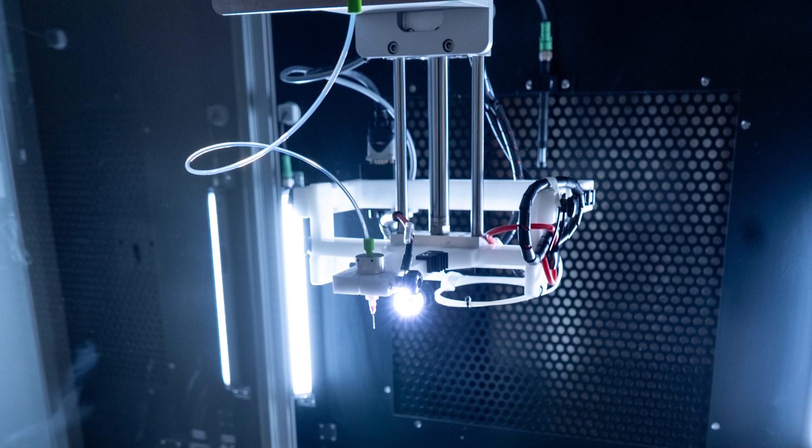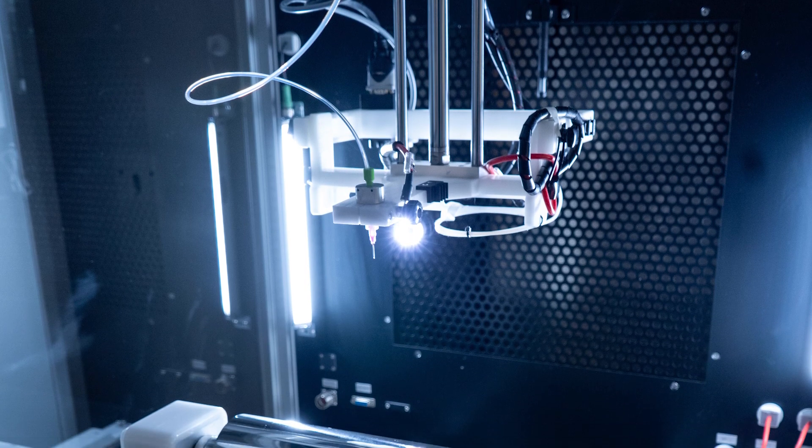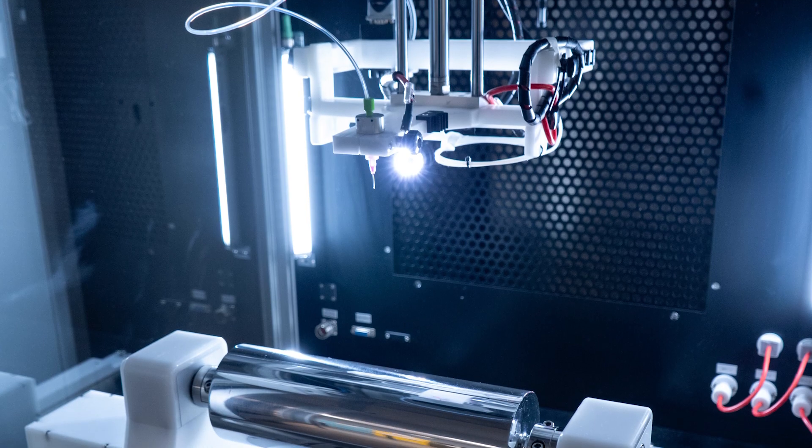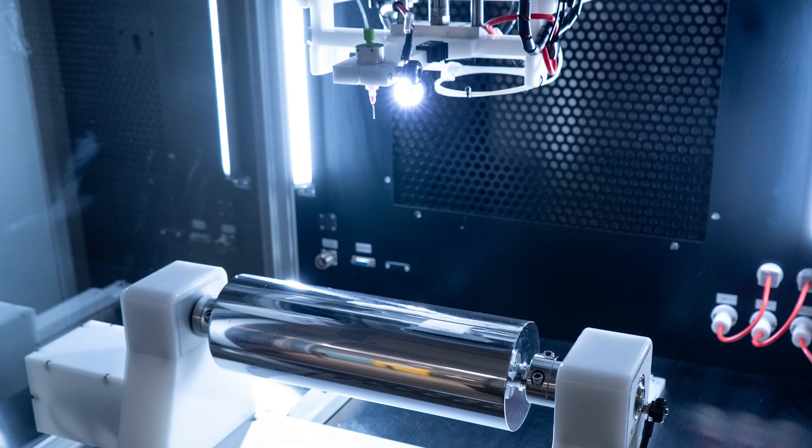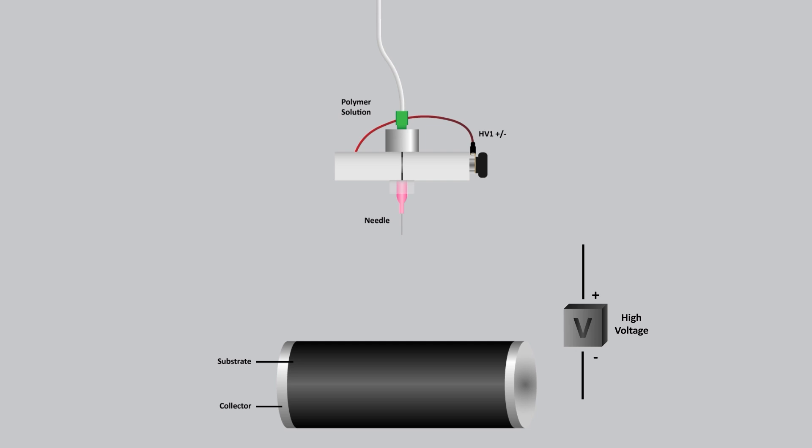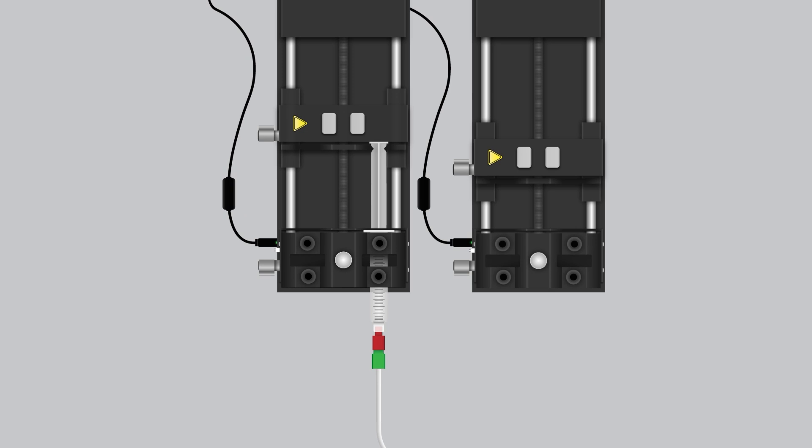Alright, so the first thing you'll need is an electrospinning setup. This may sound complex, but trust me it's not as difficult as it seems. First, you'll need a high voltage power supply. This is the heart of the operation. It generates high voltage needed for electrospinning.